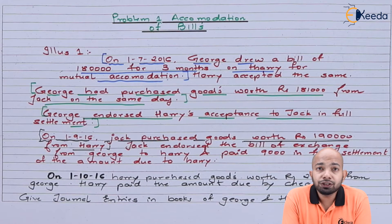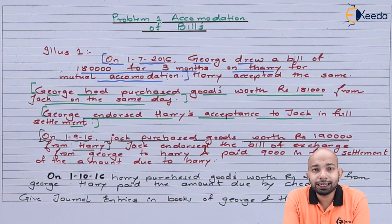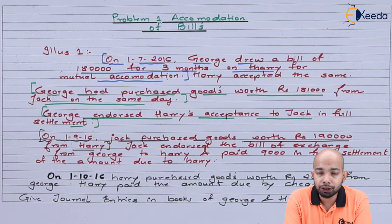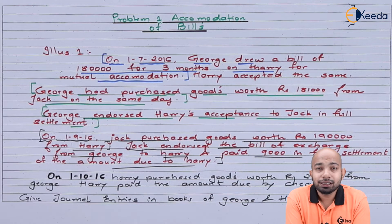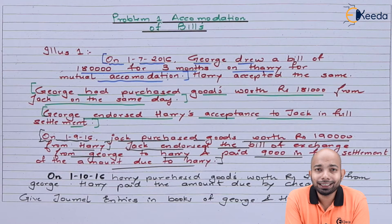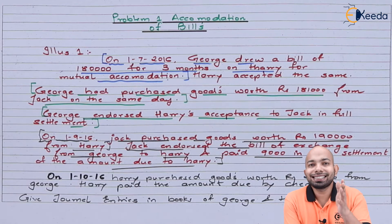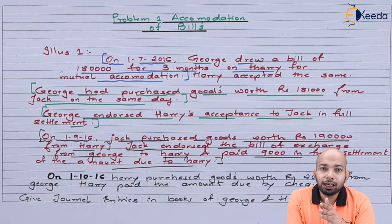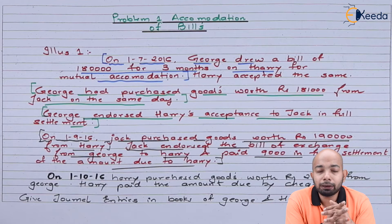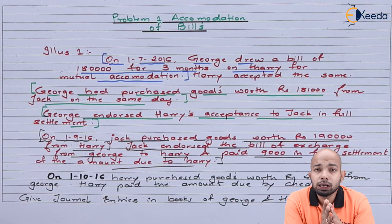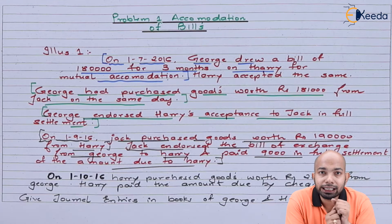On 1st of September, Jack purchased goods worth 1 lakh 90,000 from Harry. Jack forwarded the same bill of exchange of 1 lakh 80,000, received from George, to Harry and paid an additional 9,000 in cash as full settlement — giving 1 lakh 89,000 in total. This is phase three.